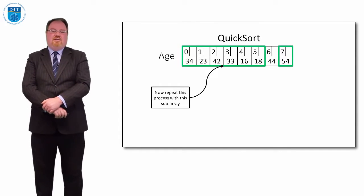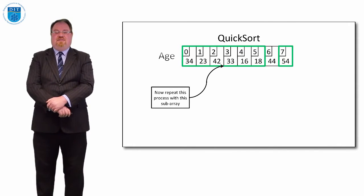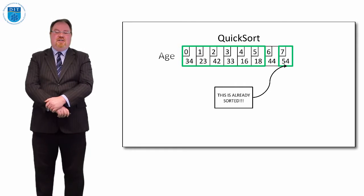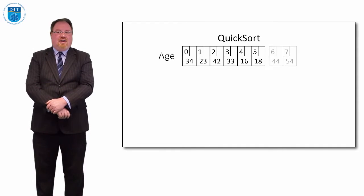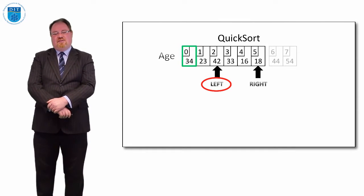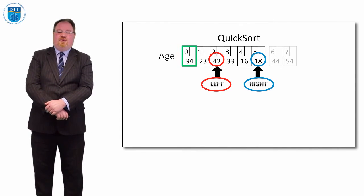We have one subarray consisting of 34, 23, 42, 33, 16, and 18. We have another subarray that simply consists of 54. The subarray consisting of 54 is already sorted and in its correct position, so we only need to concern ourselves with the other subarray. We pick our pivot as the first element, 34, and have left and right pointers pointing at 23 and 18. We keep moving the left pointer until we find 42, which is bigger than 34, and the right pointer until we find 18, which is less than 34. We swap those two values.